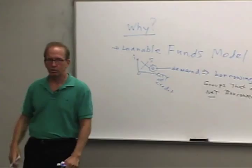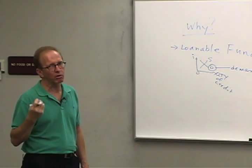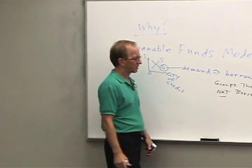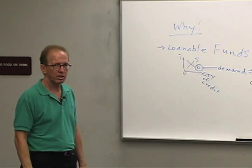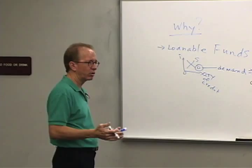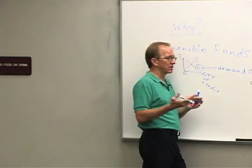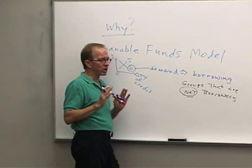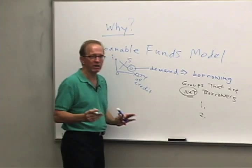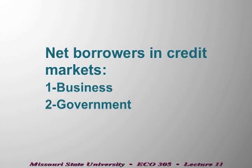We want to know who borrows more than they lend — who, on balance, borrows funds. Your net position depends on which you do more of. Once we get away from individuals and talk about groups, there are two groups that are net borrowers in U.S. credit markets: the first group is businesses, and the second group is government.